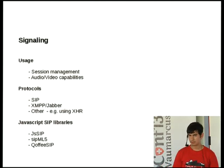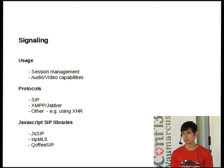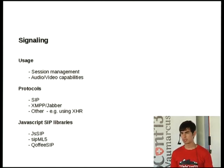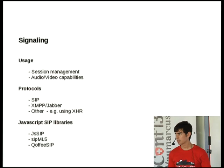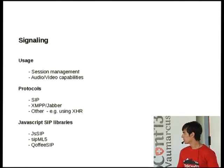About signaling: we need signaling for WebRTC. If you want to communicate with someone, you have to know their IP and establish a connection — you need a protocol for that. You also need to know the client's audio and video capabilities. The WebRTC doesn't restrict what protocol you can use: SIP, XMPP, Jabber, or even XML HTTP requests.